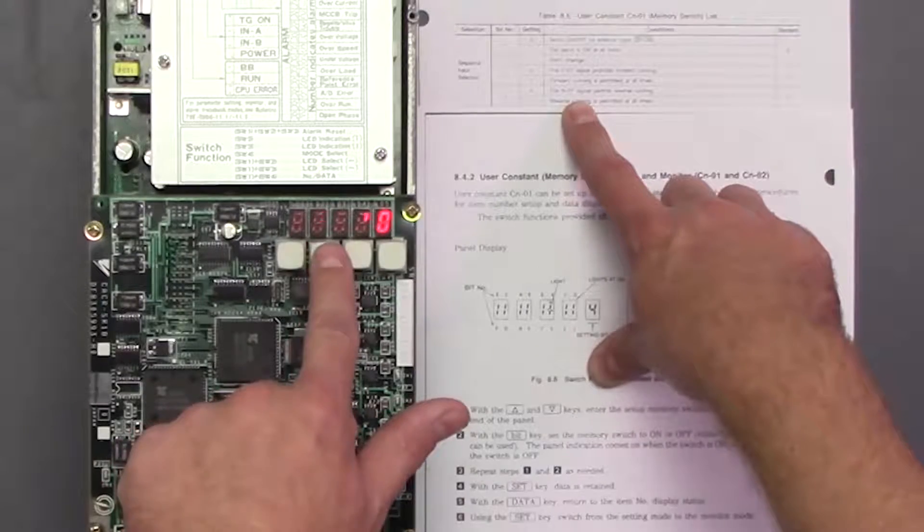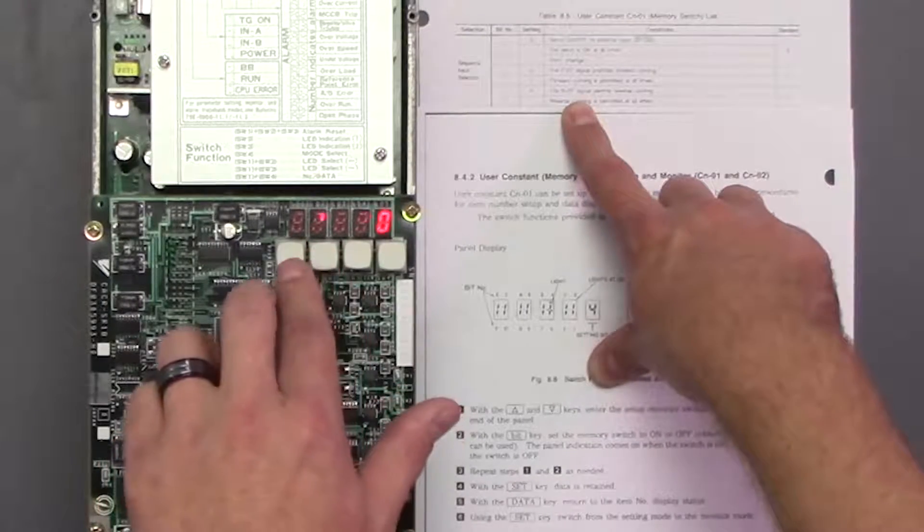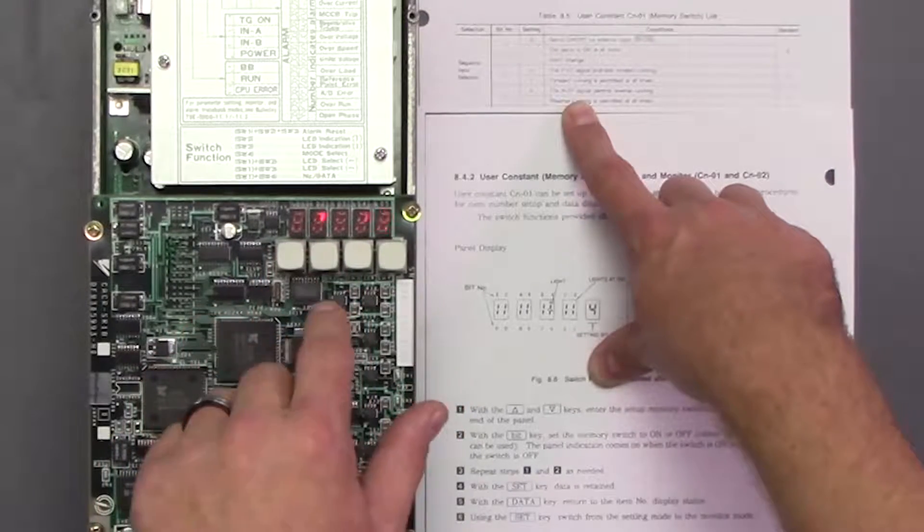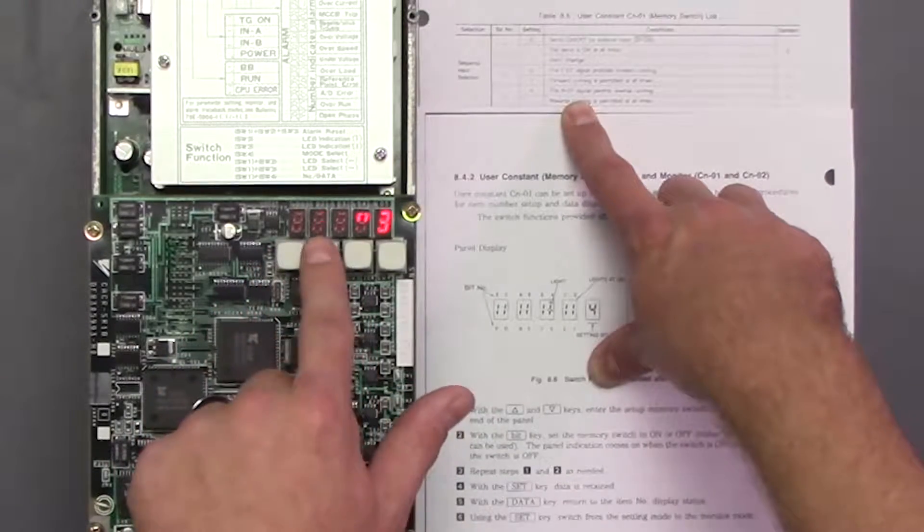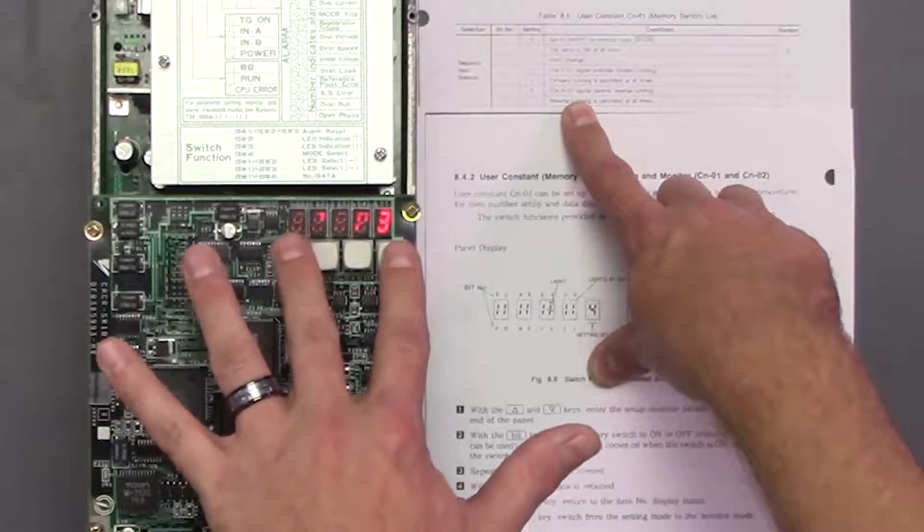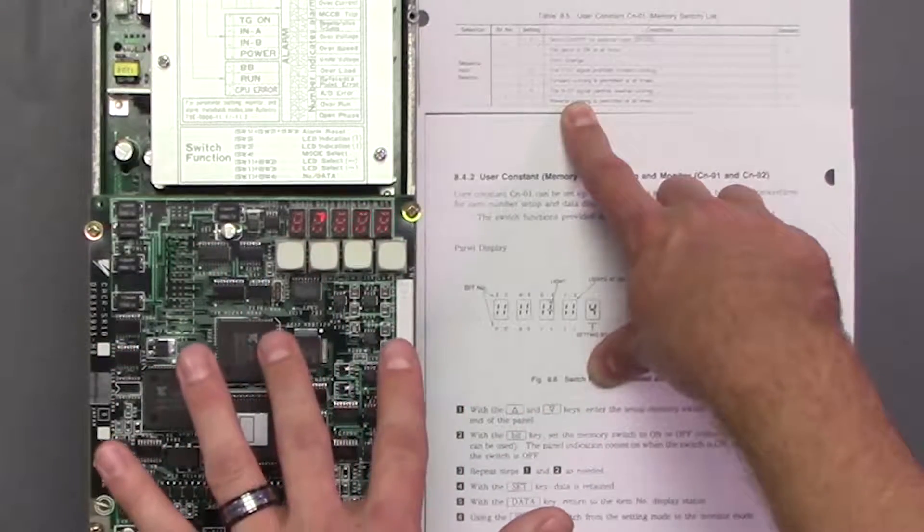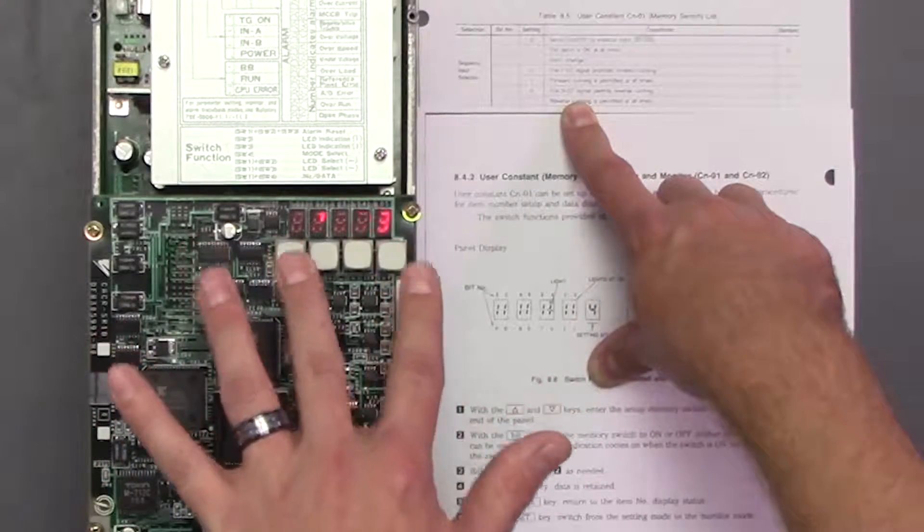So we're going to go into bit number two and turn that one on, and then we're going to go into bit number three, turn that one on, we'll save them, we'll get back out.